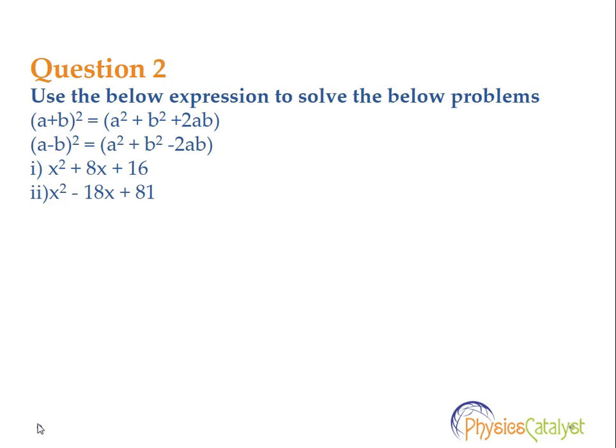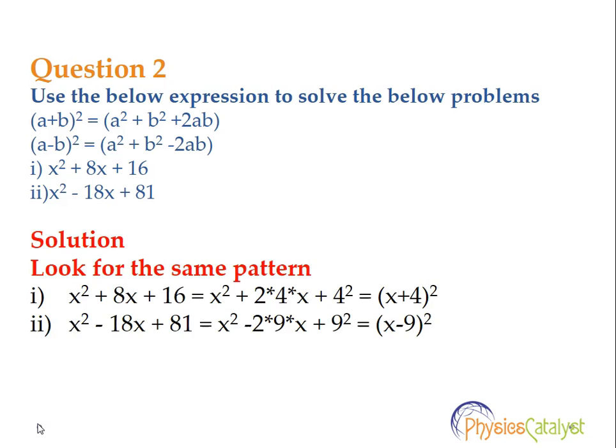Now take a look at another problem. Use the below expressions to solve the below problems. The expressions are: a plus b squared is equal to a squared plus b squared plus 2ab, and a minus b squared is equal to a squared plus b squared minus 2ab. The parts are x squared plus 8x plus 16, and part two is x squared minus 18x plus 81.